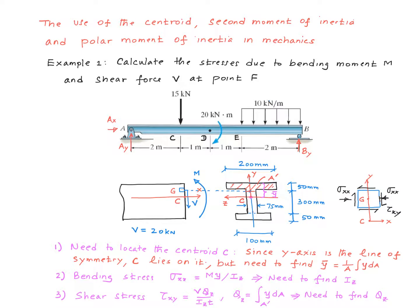Now let me briefly show you where these quantities are used in mechanics. Supposing we have a beam problem like this and we are interested in calculating the stresses at point F due to the bending moment M and the shear force V. In terms of the sectional property, the first thing you need to find is the location of the centroid of this cross-section. There is one line of symmetry for this cross-section, which is the y-axis. Therefore, the centroid must lie on that axis, but we need to find this distance y-bar. For that, we go back to our original formula: y-bar equals 1 over A times the integral of y times dA.